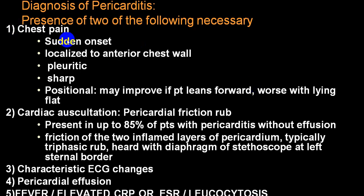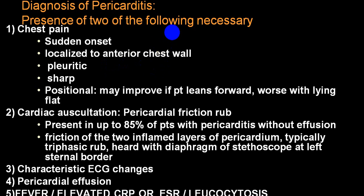Chest pain in pericarditis will be sudden, localized to the anterior chest wall, mainly the precordial region — sharp, pricking in character. It usually does not radiate, but if there is involvement of the inferior pericardium, it can radiate to the left or right shoulder. It may improve if the patient leans forward and worsens while lying down flat or by applying pressure on the chest. Presence of a pericardial rub helps label it as pericarditis pain.